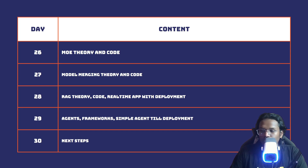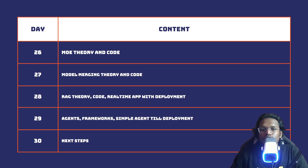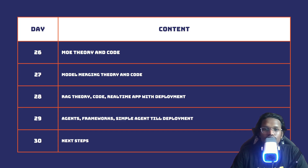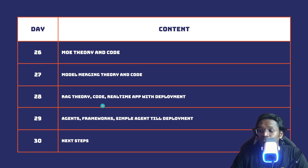If you still want to improve performance or update your model after deployment, other techniques come into play. Day twenty-six covers Mixture of Experts (MoE) — theory and code — useful for multi-task and multi-language training. Model merging also falls under this umbrella, where you train separate models and merge them into one. Day twenty-eight covers RAG: theory, from-scratch coding, and real-time deployment. For a more detailed RAG course, I've already made a five-hour course you can check out.